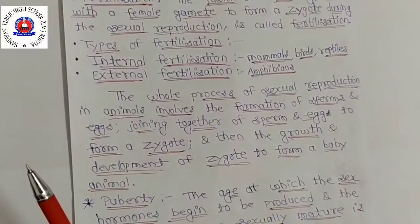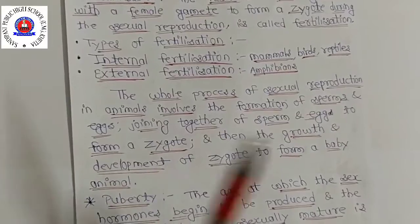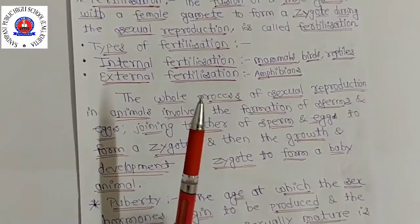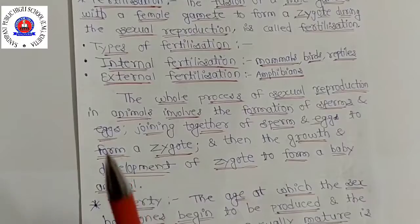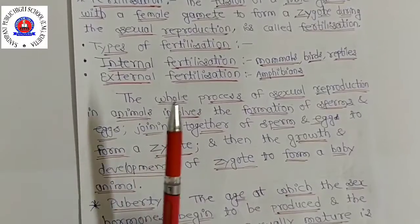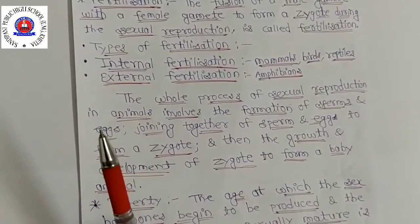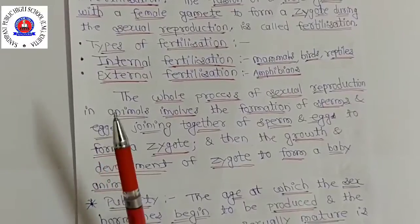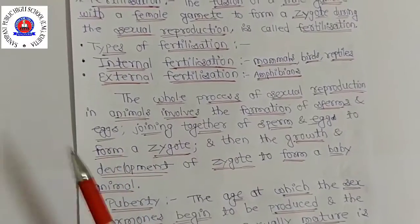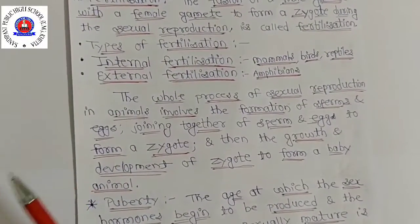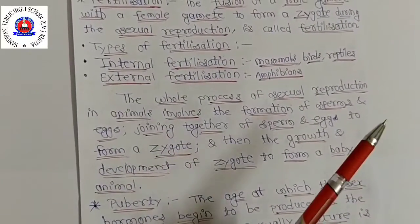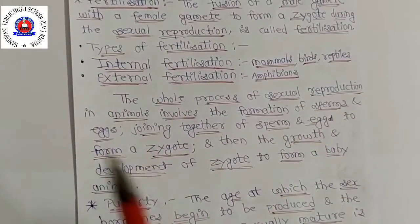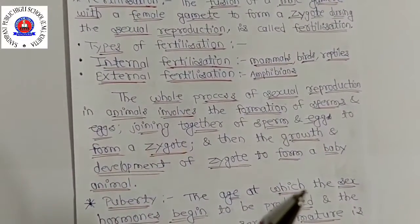In this way, sexual reproduction leads to greater variety in a population. Sexual reproduction plays an important role in the origin of new species having different characteristics. This genetic variation leads to the continuous evolution of various species to form better and still better organisms.